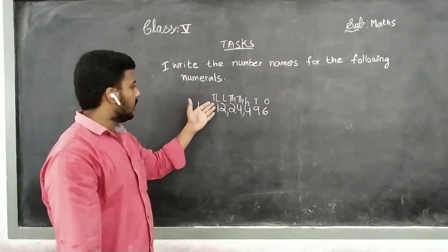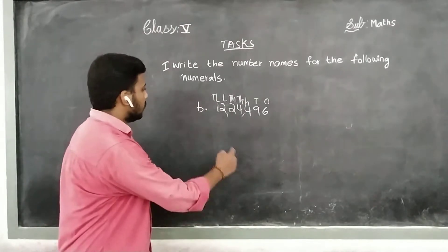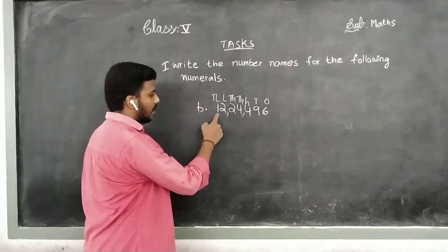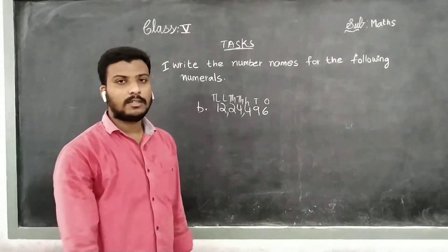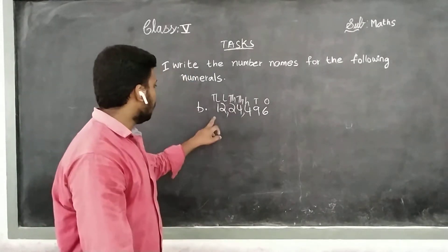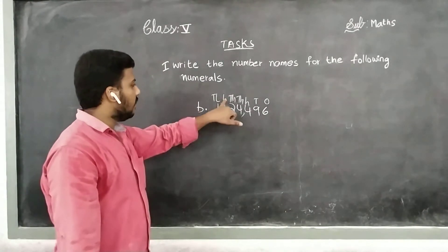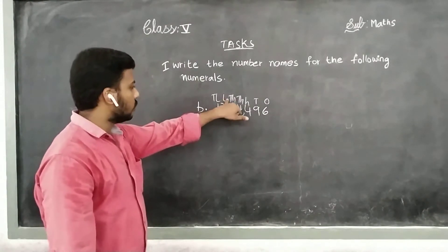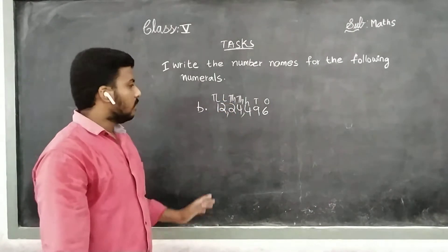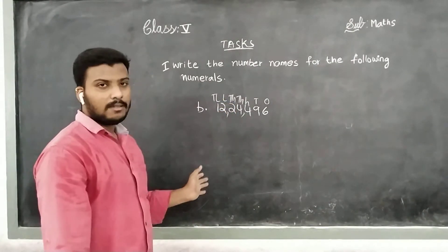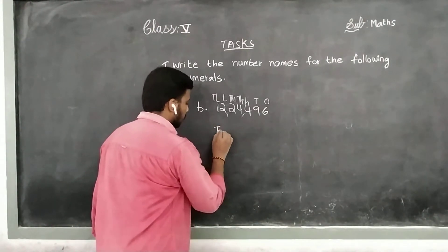So because there is a biggest value, we have to start from the left side. In the place of ten lakh, the value is 1. 1 into ten lakh — how much? Ten lakh. Then again in the place of lakh, we have 2. 2 into lakh — how much? Two lakhs. So ten lakh plus two lakh — how much? Twelve lakhs.